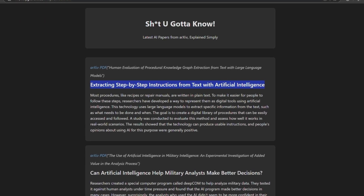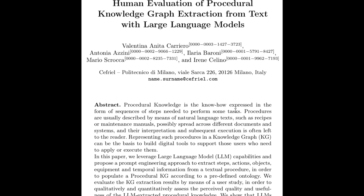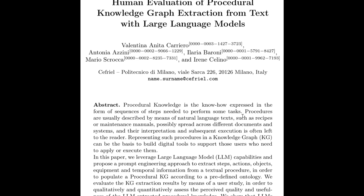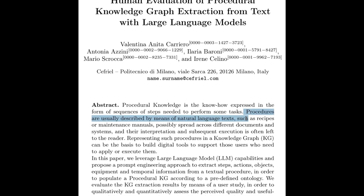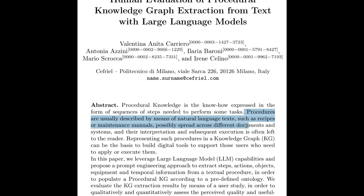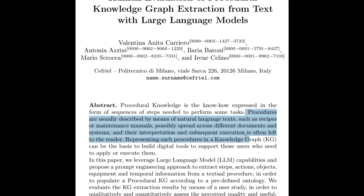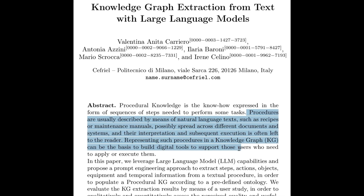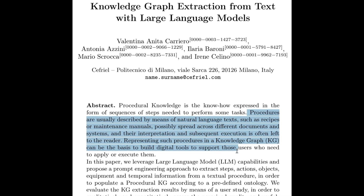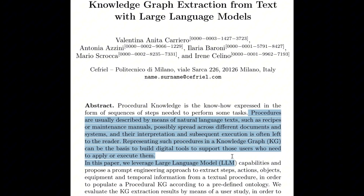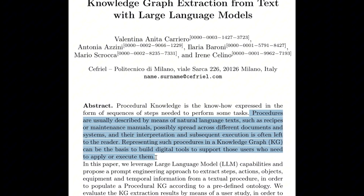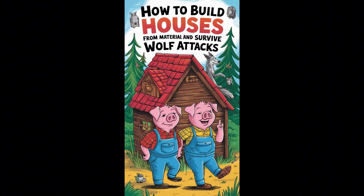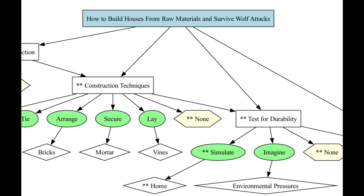Which means what, exactly? It means it's possible to turn nearly any document describing nearly anything into a step-by-step logical flow that can be used to accomplish whatever. Theoretically, you could turn the Three Little Pigs into a how-to-build-houses-from-raw-materials-and-survive-wolf-attacks flowchart. That's the first thing you said I've understood.